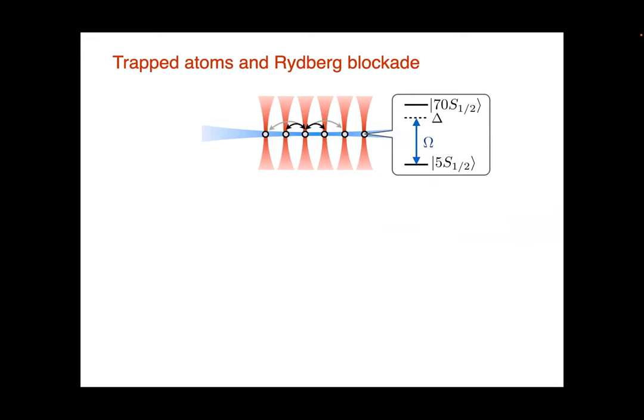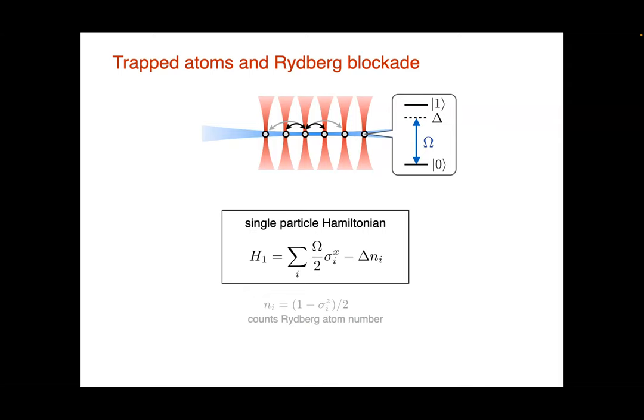Just to fix notation and concepts: I'm talking about Rydberg blockade physics where we have two internal states of these atoms. One is a hyperfine ground state, and one is a highly excited Rydberg state that we couple by a laser with Rabi frequency omega and detuning delta. This will be our two-level system with states zero and one, described by the familiar Rabi Hamiltonian.